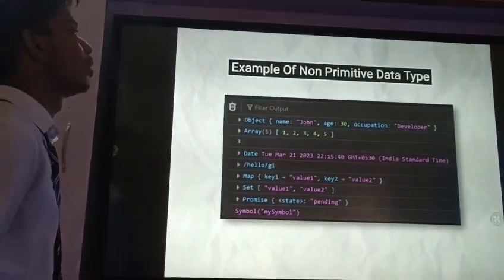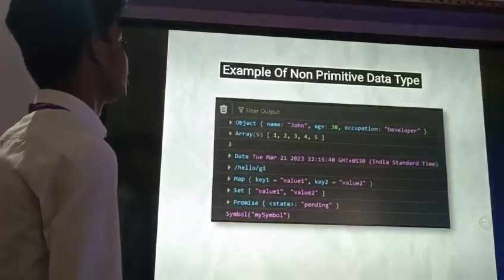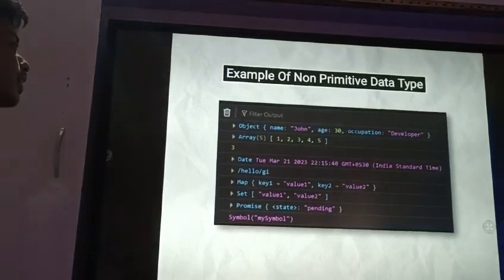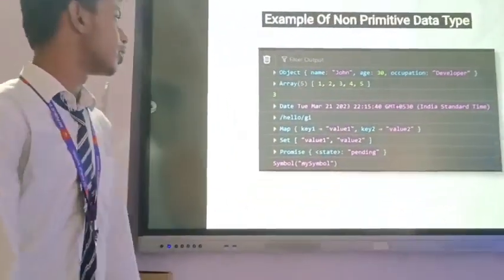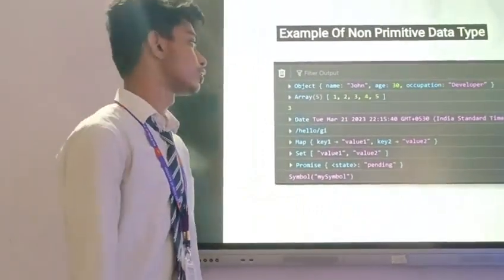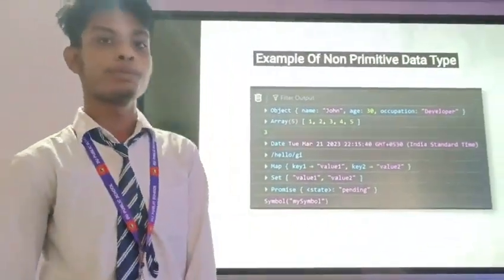Now here is the example of non-primitive data type. In non-primitive data type, there is object and another one is array. Array is mostly used nowadays for database purposes and all.